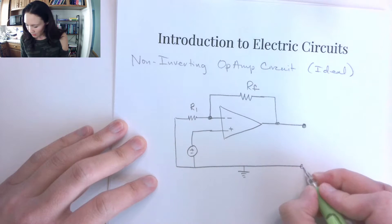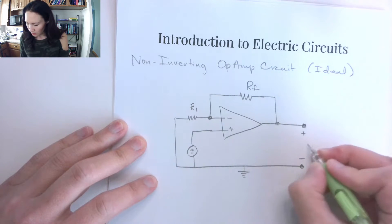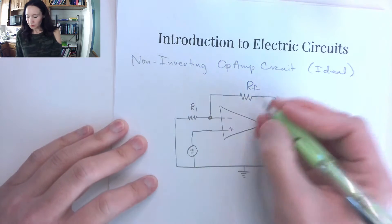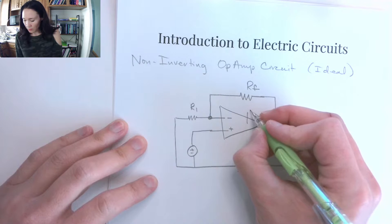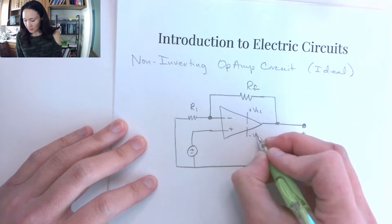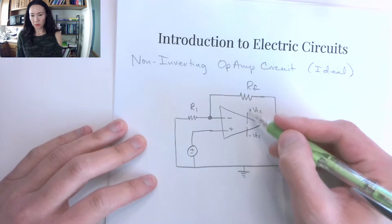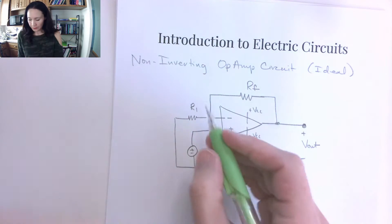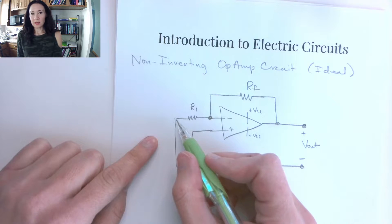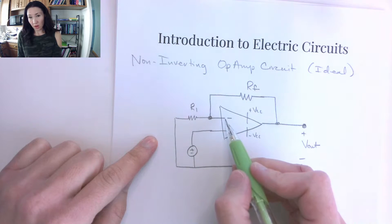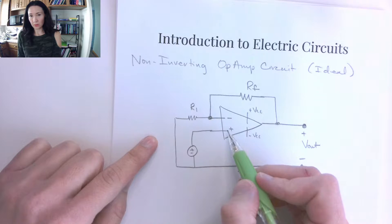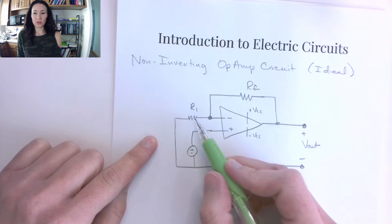These terminals here are where we're going to measure our output of the amplifier. You may or may not see in the schematic the plus and minus VCC to turn the op-amp on. Here we have the input resistor, which is external to the op-amp — different from the Rn between the two input terminals.